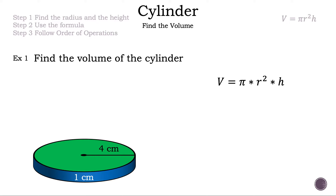Now let's read the question: find the volume of the cylinder. The volume formula is already on the screen. V is equal to pi times radius squared times your height. Now let's take a look at the cylinder. They gave us two measurements: four centimeters and one centimeter.